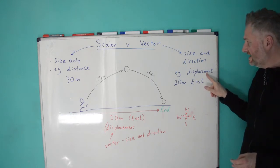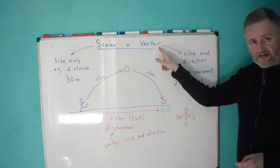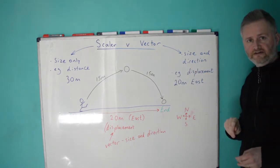OK? So, displacement is an example of a vector because it has size and direction.